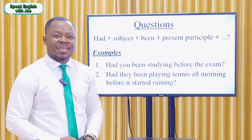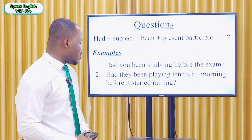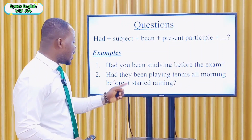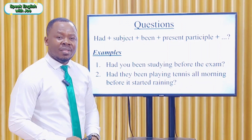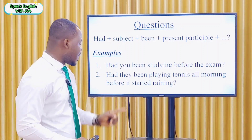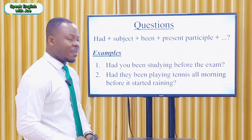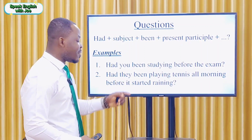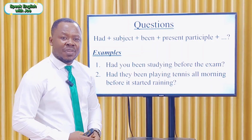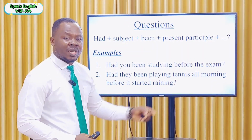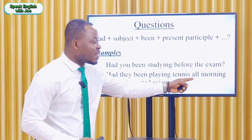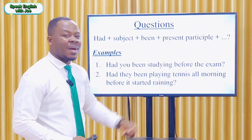Example two: 'Had they been playing tennis all morning before it started raining?' In this question, we begin with the first helping verb 'had', plus the subject 'they', plus the second helping verb 'been', plus the main verb 'play' plus -ing (the present participle), plus the rest of the sentence, then the question mark.